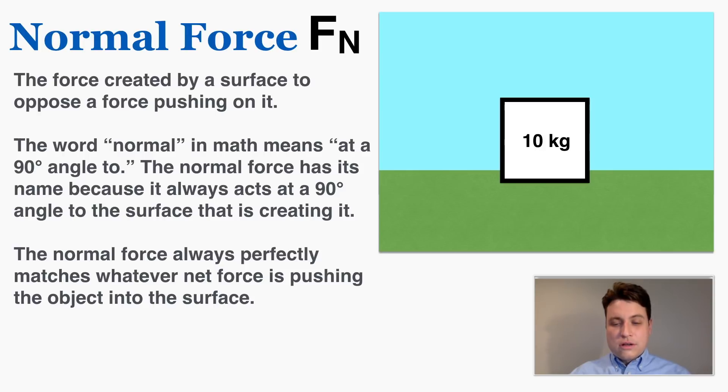If this box is resting on the ground we know that it has a force of gravity pulling it down of 98 Newtons based on the previous definition, but it doesn't fall through the ground. That means that there must be some other force pushing it up and this we call the normal force. The force that the ground is putting up on the box to support it. The normal force always perfectly matches whatever net force is pushing the object into the surface. You'll notice that it's at a 90 degree angle to the ground, so that's why we call it the normal force, and it's also 98 Newtons to match the force of gravity.